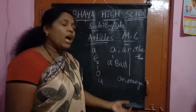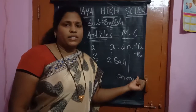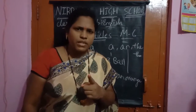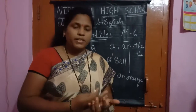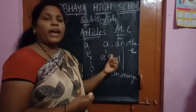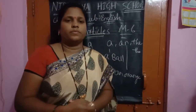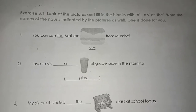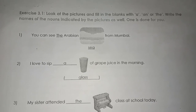Now, I have already asked you to complete the exercises. Have you completed them? If you have completed it, check whether it is correct or wrong. If you have not completed it, write it out. This is Exercise 3.1 in the workbook — Module 6. Look at the picture and fill in the blanks with A and The. Write the names of the nouns indicated by the picture. They have given a picture — you should write the name of the picture and use the articles A and The.